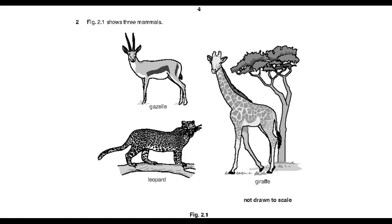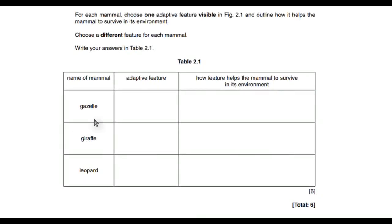We'll start with the gazelle. We talked about the long legs, the large ears, and the horns. The long legs help it to escape predators. The large ears help to warn of dangers or any predators which are coming. The horns can be used for defense. That is how they help the animal to survive.